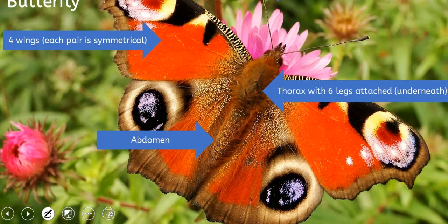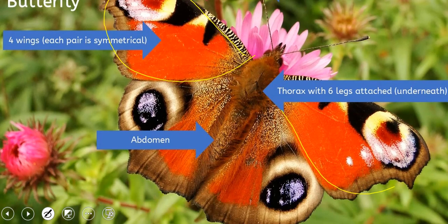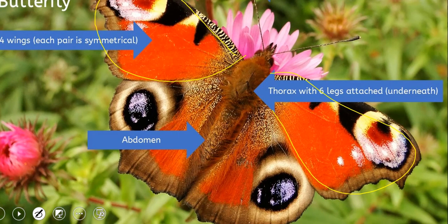Here's a close-up look at a peacock butterfly. You can see that they have four wings — the two at the front and the two at the back.